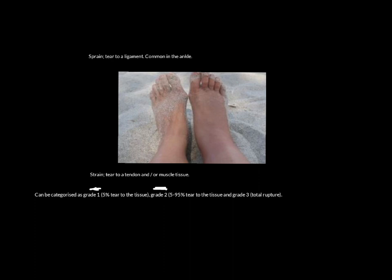With these injuries, they can often be categorized as grade one, grade two, and grade three. Grade one is where you've damaged about 5% of the tissue — grade one sprains and strains aren't that worrying, and you'll be back on your feet within two or three weeks. Grade two is very ambiguous, ranging from 5% to 95% of the tissue, so you can have a mild or very severe grade two. Grade three is a total rupture — you've gone all the way through the ligament or tendon.